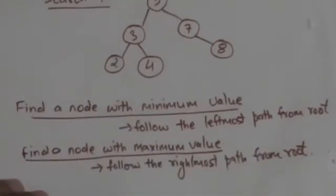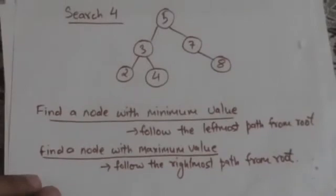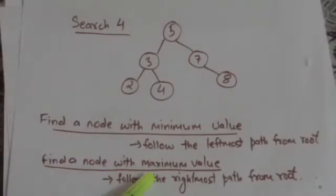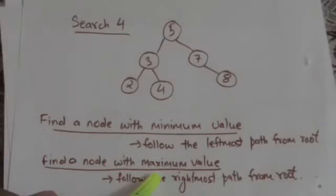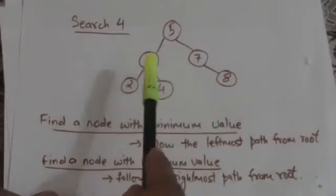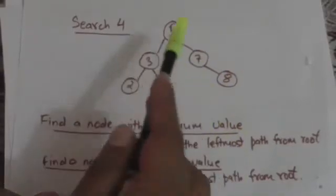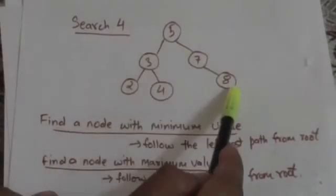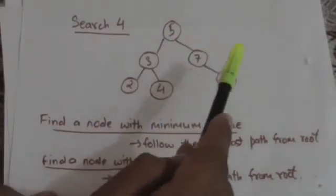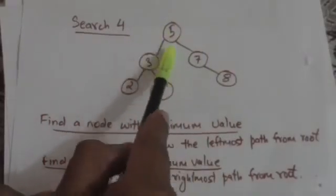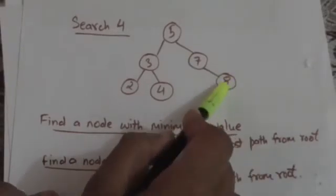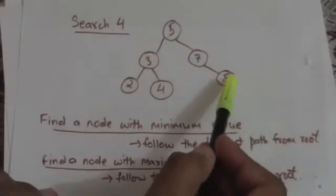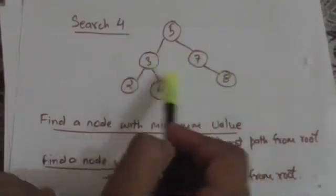To find the node with the maximum value in a binary search tree, we follow the rightmost path from the root. The node we reach at the end contains the maximum value. In this example, following the rightmost path from root, we reach the node with value 8, which is the maximum value in this binary search tree.